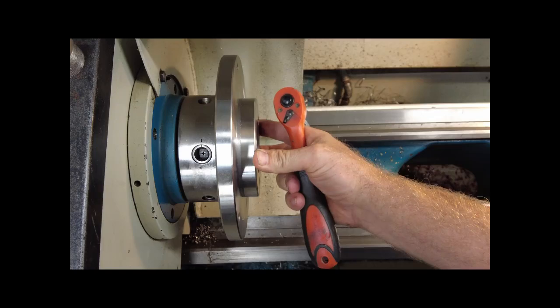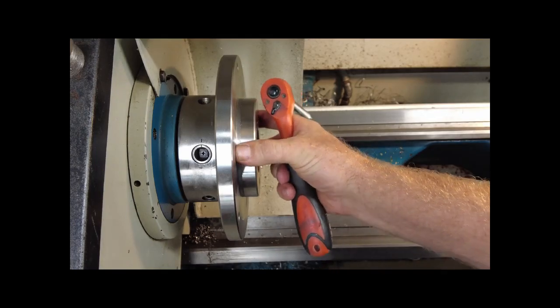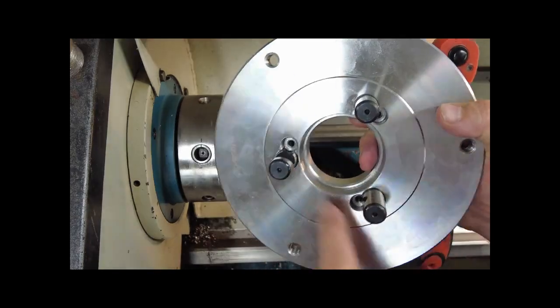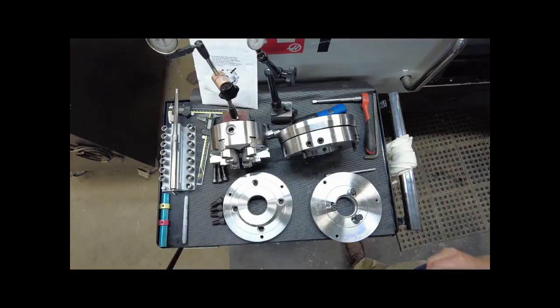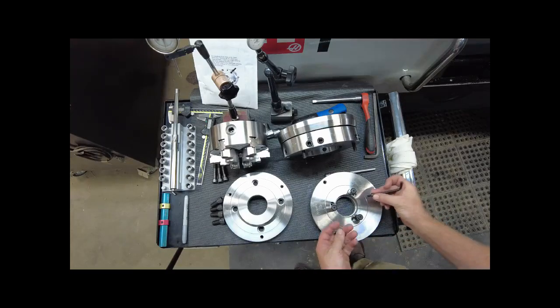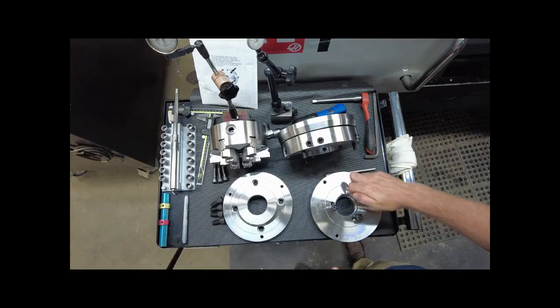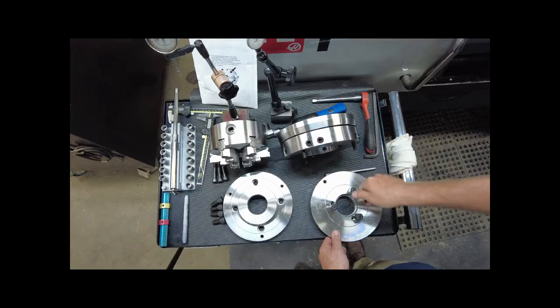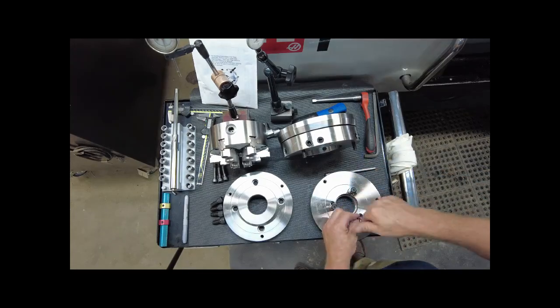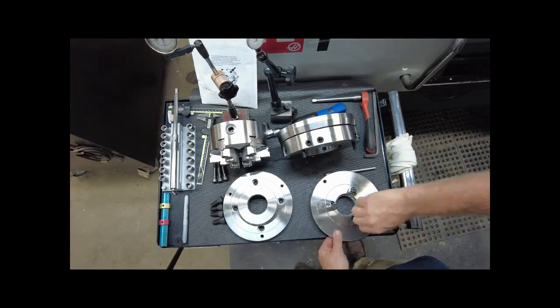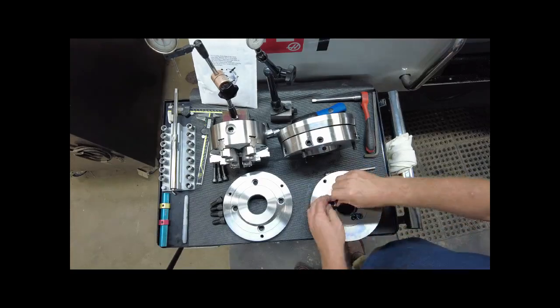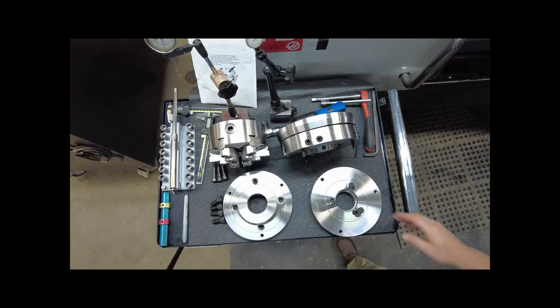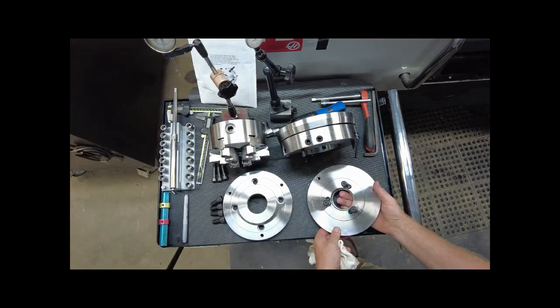At this point we will install the three keeper screws that lock the rotation of the cam lock pins. They will go in these locations. Let's install the three cap screws that lock the rotation of the cam lock pins. With the rotation of the cam lock pins locked.